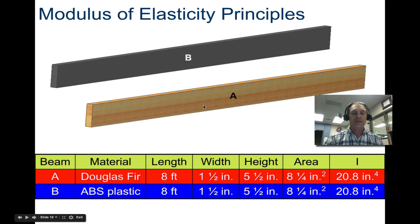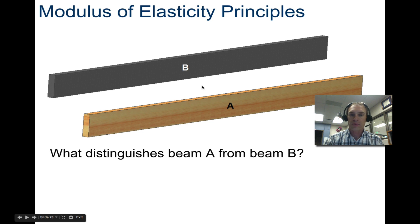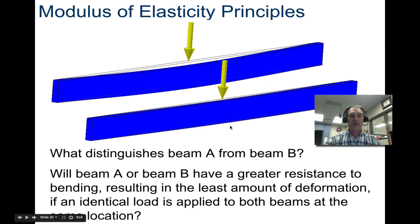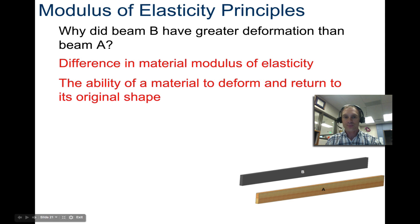Let's take a look at modulus of elasticity principles. We have ABS plastic and Douglas fir, all the same dimensions, the same second moment of inertia. But now we need to take a look at some other properties. What distinguishes A from B if they have the same moment of inertia? Which one will have a greater resistance to bending? You can see that in this case, the ABS, with the same force, has more bending than the Douglas fir. So why? It's because of the modulus of elasticity.